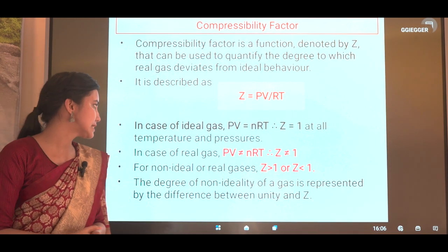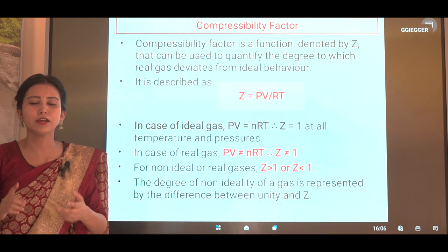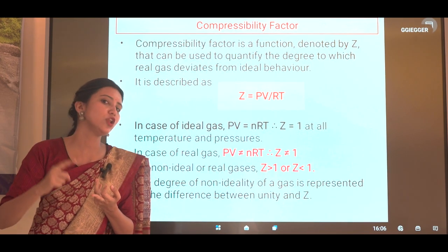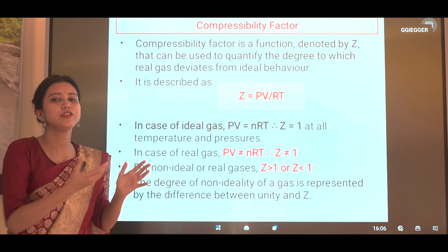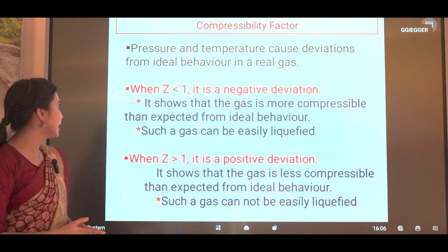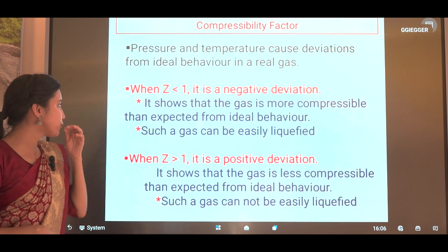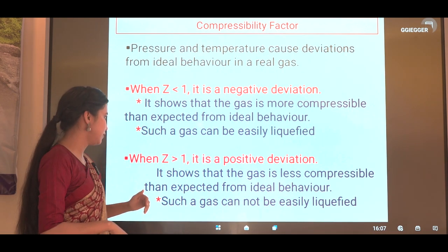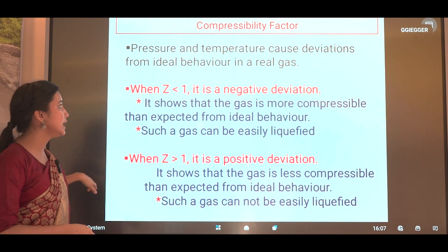In the case of real gases, PV is not equal to nRT, so Z will either be greater than one or less than one. The degree of non-ideality of a gas is represented by the difference between Z and unity. When Z is less than one, it is called a negative deviation — the gas is more compressible than expected and can be easily liquefied. When Z is greater than one, it is called a positive deviation — the gas is less compressible than expected and cannot be easily liquefied.